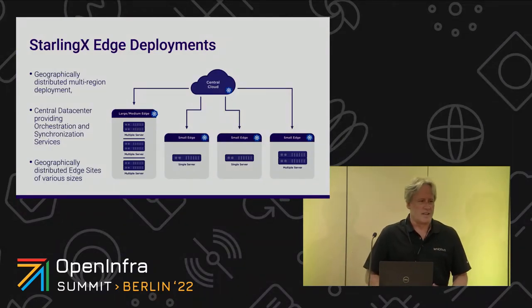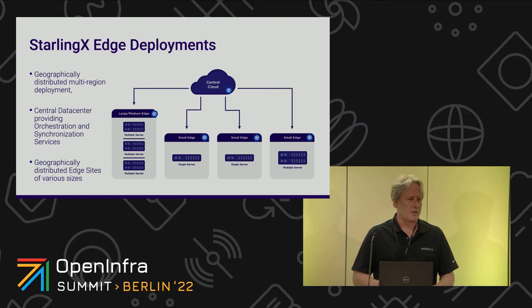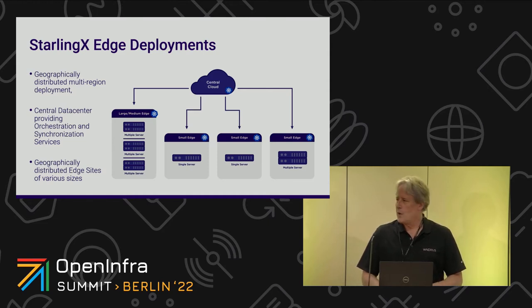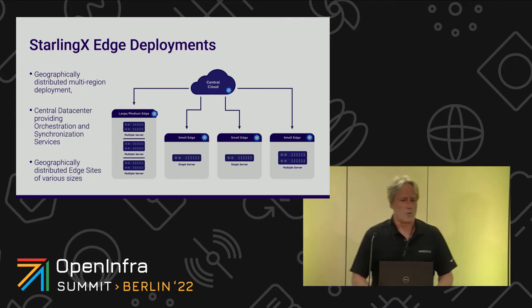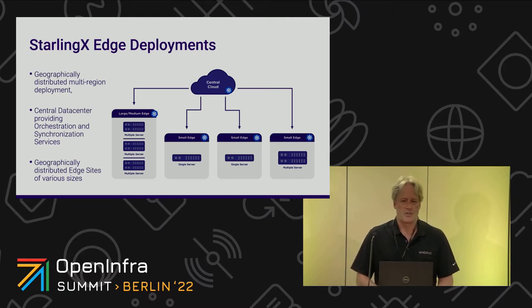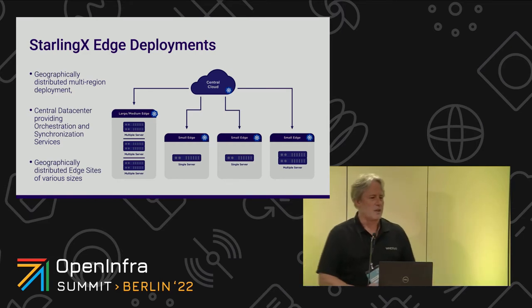StarlingX is an edge cloud technology — basically built around Kubernetes and the CentOS operating system. We can run OpenStack optionally, but it's a cloud deployment. We can deploy it in a number of configurations, all the way down to an edge configuration of one or two nodes — one if you don't need high availability in a hyper-converged configuration — or in a duplex if you need redundancy or higher capacity.